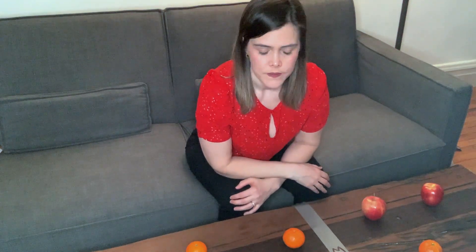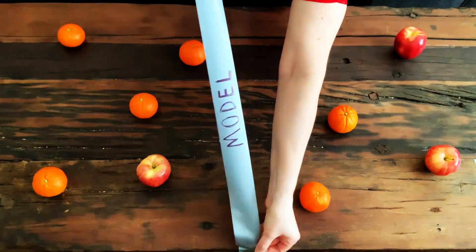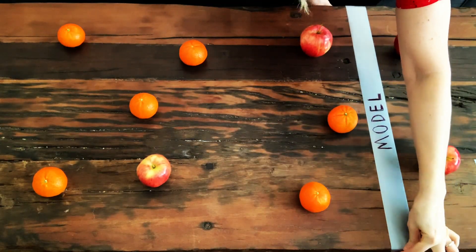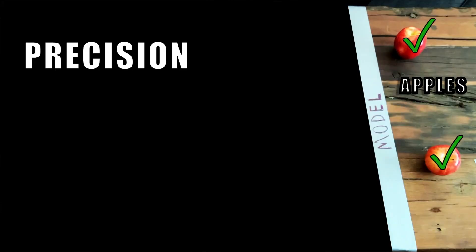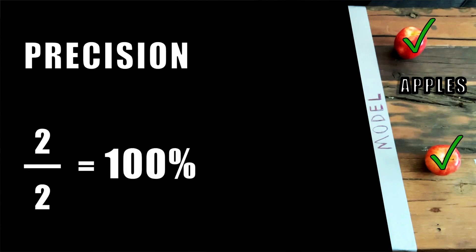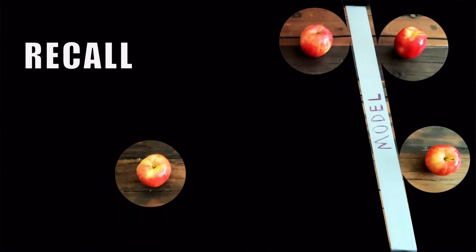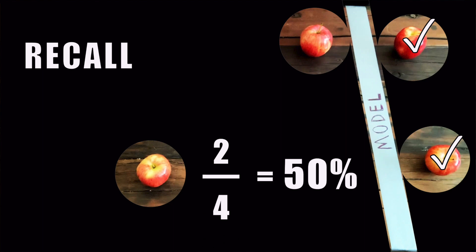It turns out there's a nice trade-off between precision and recall. Some models have what's called a decision threshold, which means you can move the model to a different threshold. For example, if we shift it to improve precision, we get two observations classified as apples and they're both correct — so precision is 100%. But recall drops: now only two apples are correctly classified out of four possible, so recall drops to 50%.